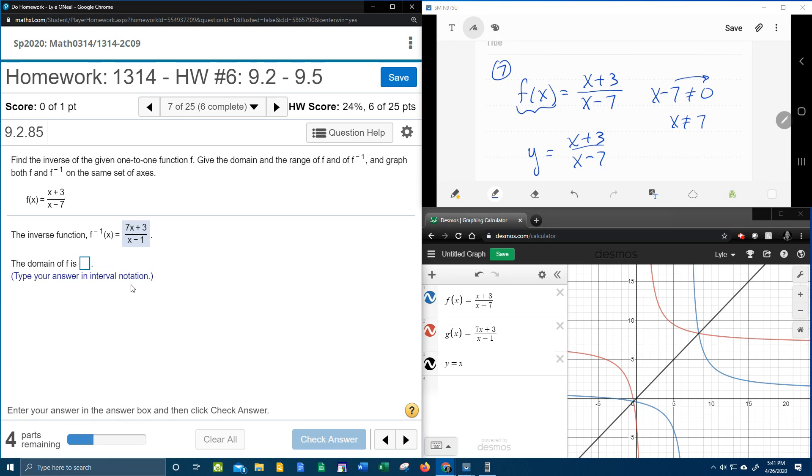And so the domain, noticing that it wants the domain in interval notation, is going to be everything from negative infinity up to 7, and then everything from 7 to infinity.